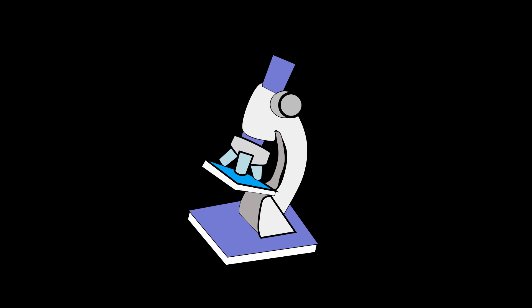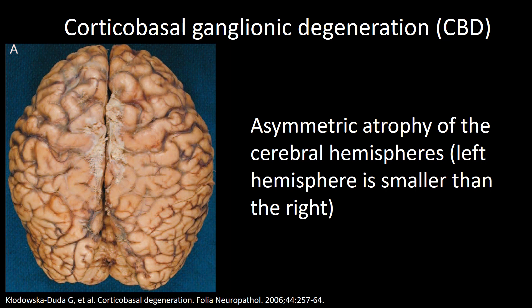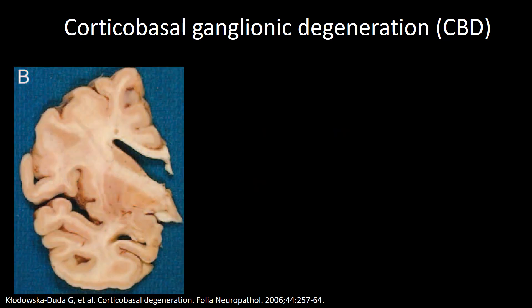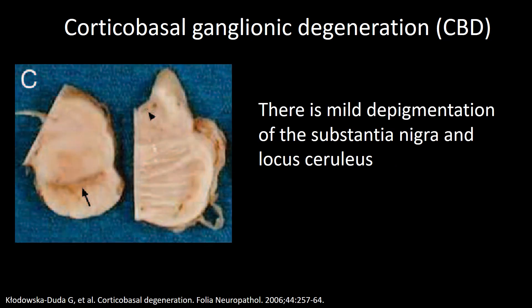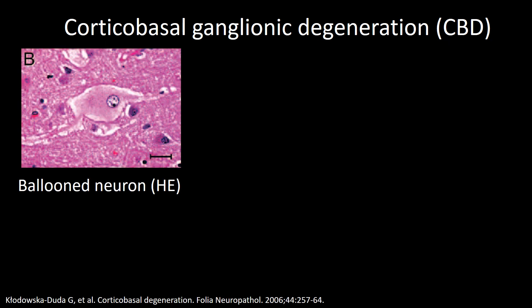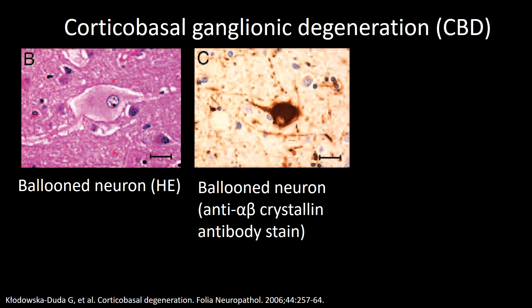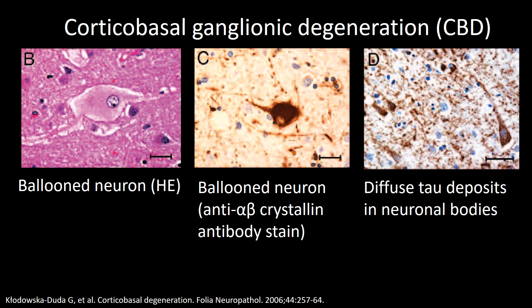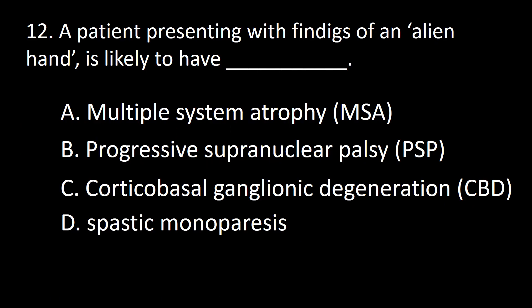The pathology of corticobasal ganglionic degeneration consists of asymmetrical cerebral atrophy — the left hemisphere smaller than the right — and atrophy of the substantia nigra. Histologically, one can find balloon neurons using HNE stain or anti-alpha-beta-crystallin antibody stain, as well as diffuse tau deposits in neurons. So the answer is C.